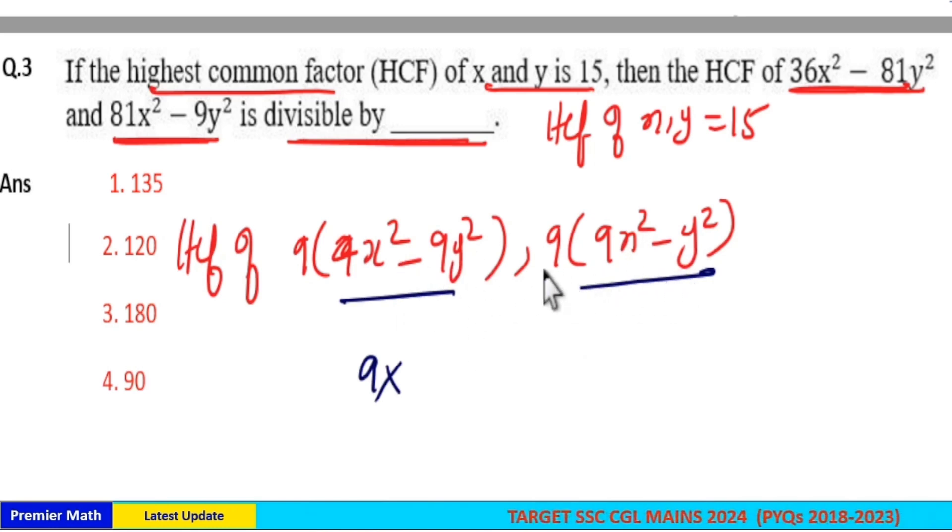x² - y² means (x + y)(x - y), and here x and y common factor is 15. The highest common factor is 15.